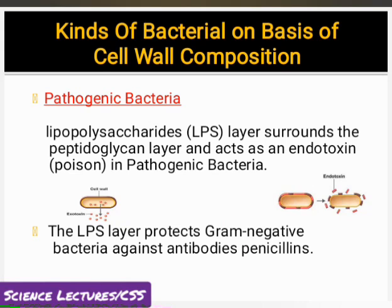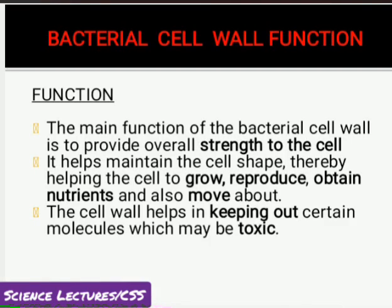Bacteria کی third kind pathogenic bacteria کی ہے — یعنی disease causing bacteria۔ یہ two kinds کے toxins release کرتے ہیں: exotoxins and endotoxins۔ Exotoxins proteins ہیں جو cytoplasm release کرتا ہے اور یہ surrounding میں toxic effects پیدا کرتے ہیں۔ جبکہ endotoxins جو ہیں وہ lipids ہوتے ہیں اور cell wall کا part ہوتے ہیں gram negative bacteria کے اندر۔ Lipopolysaccharide layer ان کو antibiotic penicillin سے protection دیتی ہے۔